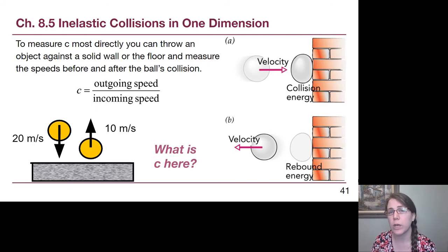So if we wanted to measure C quite quickly, we could throw an object against a solid wall or the floor and measure the outgoing speed compared to the incoming speed. If they're the same, C equals 1. And if there was no bounce, that outgoing speed is 0.